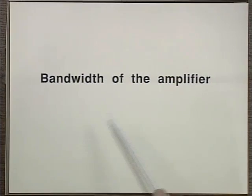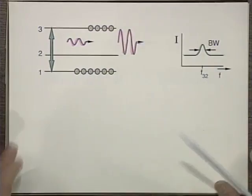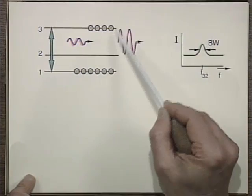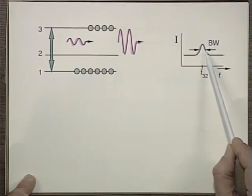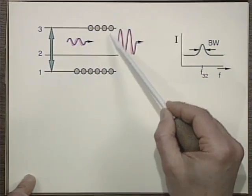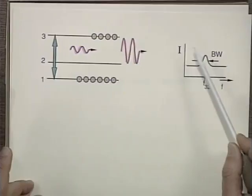The bandwidth of the amplifier is really the tuning range of the laser. We're dealing with essentially a three-level system, where a pump creates a population inversion between levels three and two. We get gain at this three-to-two frequency, and the amount of gain depends on some constants, but the key thing is the population difference. The width depends on what we want to find out.